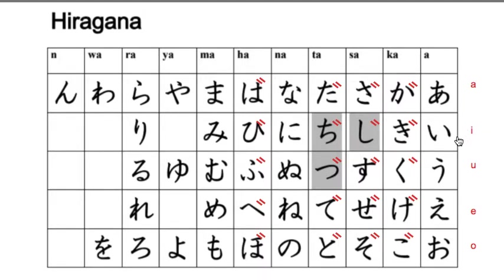In the 'i' row, you have i, ki, shi, chi, ni, hi, mi, and ri. In the 'u' row: u, ku, su, tsu, nu, fu, mu, yu, ru.